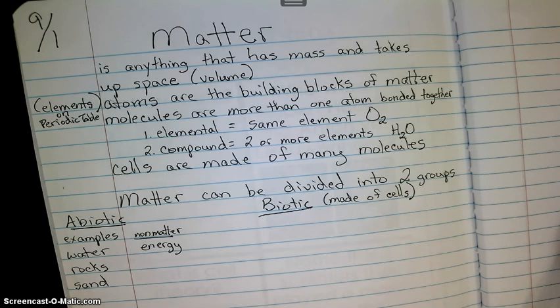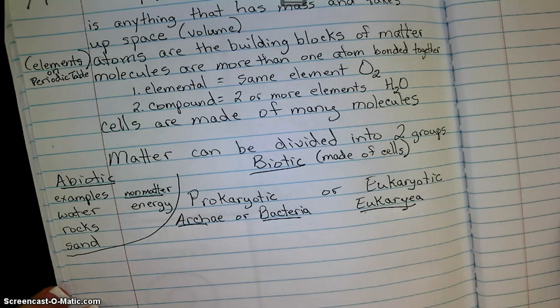Biotic can be divided into prokaryotic and eukaryotic. So there are three domains. Two of them are prokaryotic, archaea and bacteria. One of them is eukaryotic, eukarya.